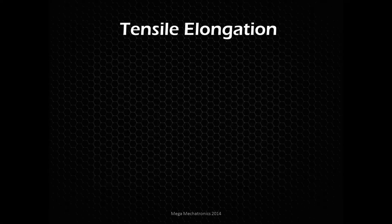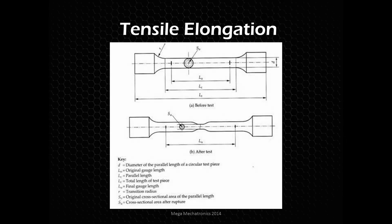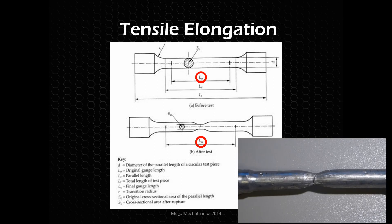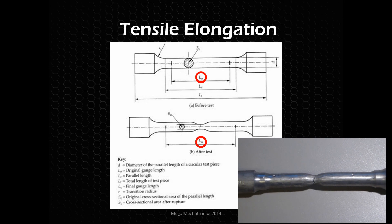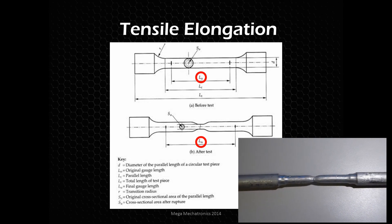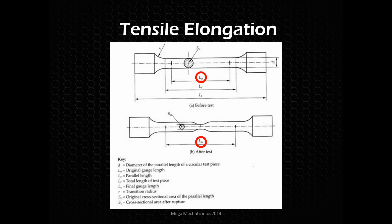Elongation is another important property. Before the specimen is pulled, we mark a known distance — maybe with a sharpie or a dimple. After the test the specimen is a little longer because it necked down and pulled apart. We put the broken pieces back together and measure that change. If you look at the stress-strain curve at the breaking point and go down to the strain axis, you'll see the elongation percentage — percent elongation is another proxy to compare materials.